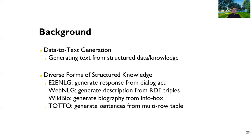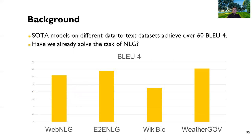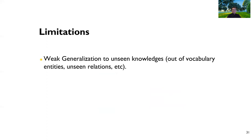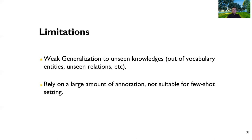Is data-to-text generation already a solved problem? The answer is no. One big issue is very poor generalization to unseen knowledge — applying any trained model to out-of-domain entities and relationships gives very poor performance. Also, it relies on very large amounts of annotation, making it very difficult to train with few examples. So the question is: can we build a task-based self-supervised learning model to improve the performance of data-to-text generation?